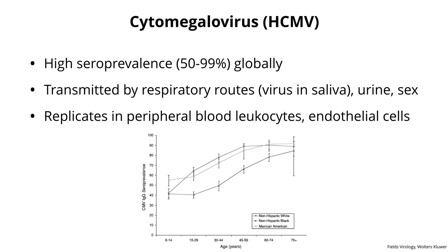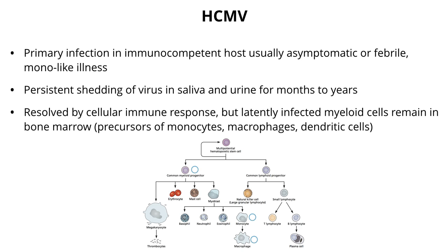Cytomegalovirus — another herpes virus. High seroprevalence globally up to 99%. A graph shows seroprevalence rising from 8 to 14 years of age up to 75 years across different ethnic groups. It's transmitted by respiratory routes, virus in saliva, also by urine — under conditions of aerosolizing urine it can be spread — and also sexually transmitted. It replicates in leukocytes and in endothelial cells of blood vessels. The primary infection in a normal host is usually asymptomatic or a mono-like illness. You tend to shed virus in the saliva and urine for months to years. Eventually virus production is resolved by your cellular response, but you have latently infected myeloid cells in the bone marrow, including common myeloid precursors in the hematopoietic stem cell differentiation scheme.